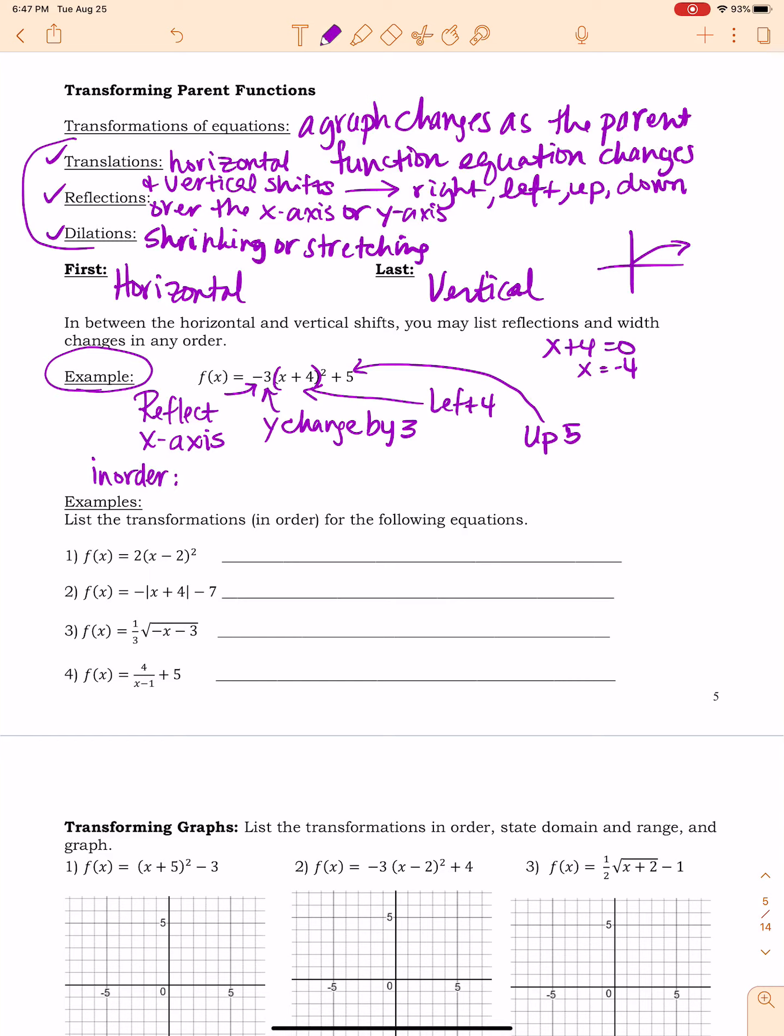But if I was going to list them in order of how I would graph it, then I would always start with my horizontal here. So I would say it's going left 4. And then all the stuff in the middle doesn't matter. So I know that we reflect over x-axis. Y has a change by 3. And then my vertical is the very last thing in order that I want to talk about.